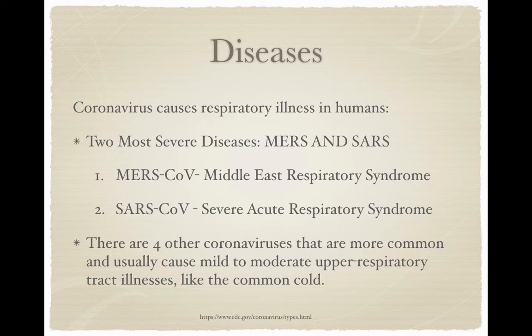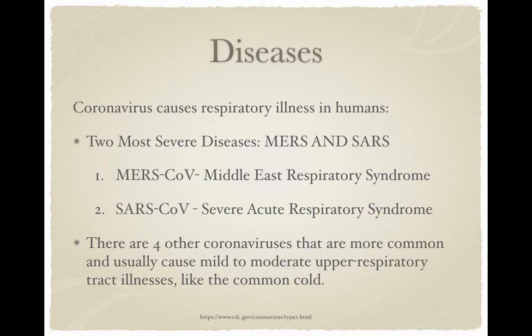Coronaviruses cause respiratory illnesses in humans. The two most severe diseases are MERS and SARS. MERS comes from MERS-CoV, which stands for Middle East Respiratory Syndrome. SARS comes from SARS-CoV, which stands for Severe Acute Respiratory Syndrome. MERS got its name because health officials first reported the disease in Saudi Arabia, and all cases have been linked through travel to or residence in or around the Arabian Peninsula. There are four other coronaviruses that are more common but usually cause mild to moderate upper respiratory tract illnesses like the common cold.